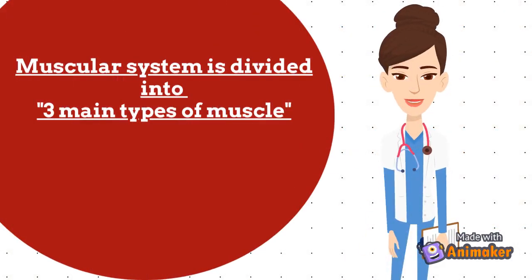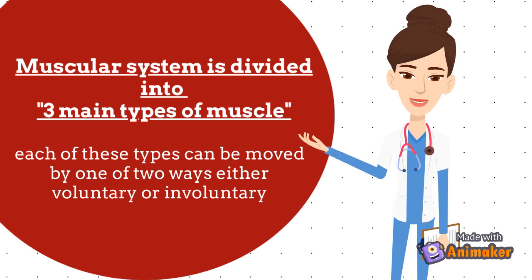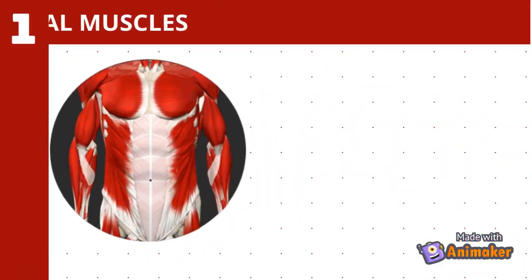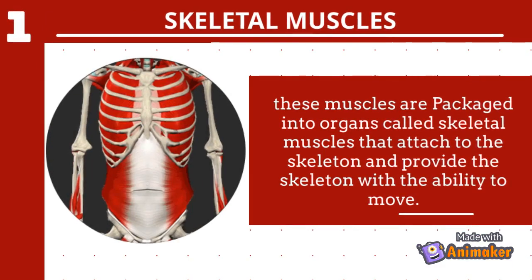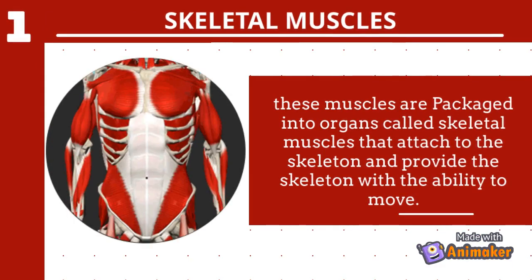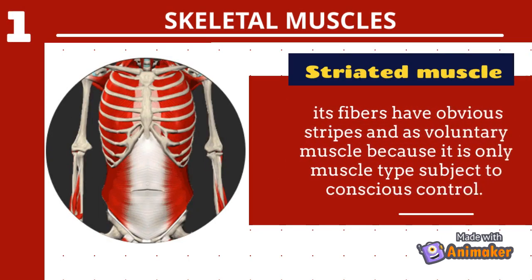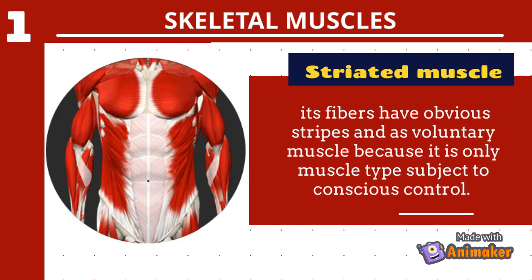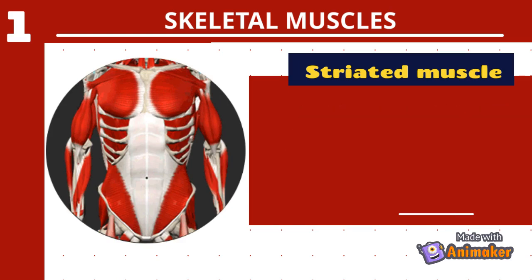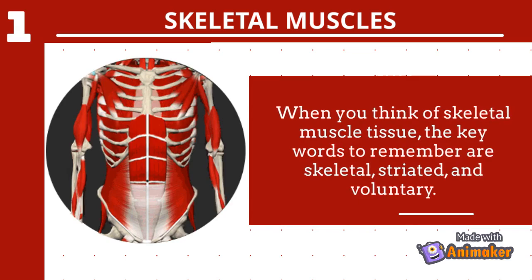The muscular system is divided into three main types of muscle, each of which can be moved either voluntarily or involuntarily. The first type is skeletal muscle. These muscles are packaged into organs called skeletal muscles that attach to the skeleton and provide the ability to move. Also known as striated muscle because its fibers have obvious stripes, and as voluntary muscle because it is the only muscle type subject to conscious control. Key words: skeletal, striated, and voluntary.